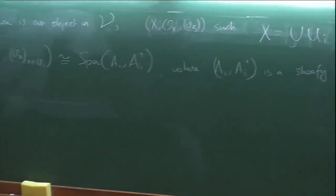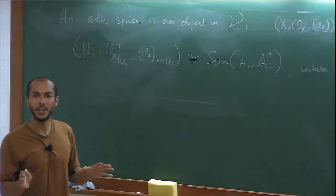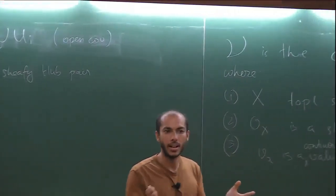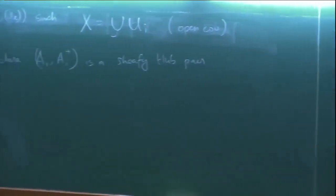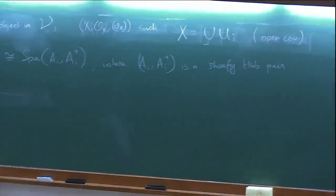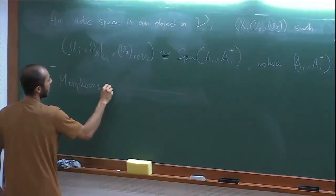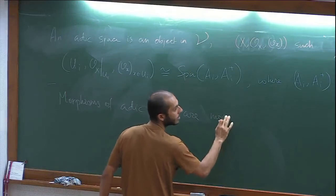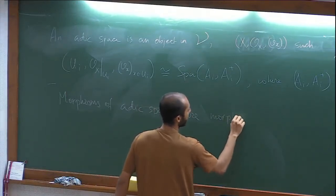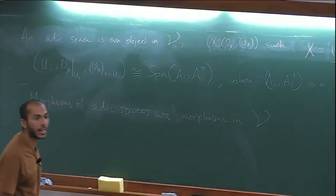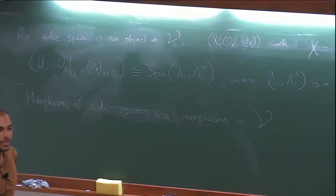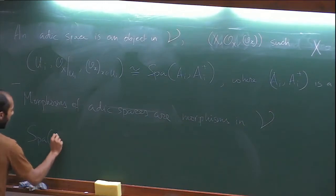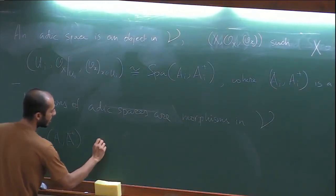In summary, an adic space is a locally topologically ringed space with valuations such that locally it looks like spa of sheafy Huber pairs. Morphisms of adic spaces are just morphisms in the category ν. The covering need not be finite — we will see examples where it is not. And spa(A, A+) for a sheafy Huber pair is called an affinoid adic space, exactly like affine schemes in algebraic geometry.